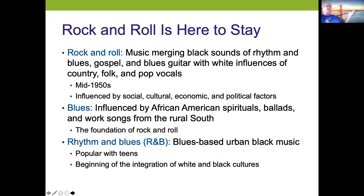Rock and roll emerged from merging black sounds of rhythm and blues, gospel and blues guitar with white influences of country, folk, and pop vocals in the 50s — think Elvis. It was influenced by social, cultural, economic, and political factors. The blues were influenced by African American spirituals, ballads, and work songs from the rural south, forming the foundation of rock and roll. Rhythm and blues was the blues-based urban black music that started the integration of white and black cultures musically.